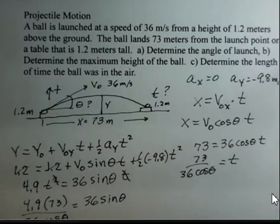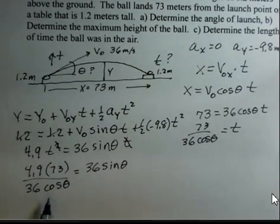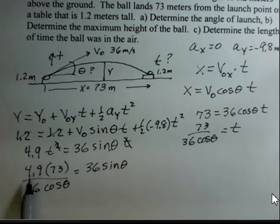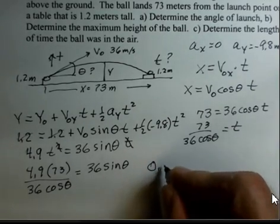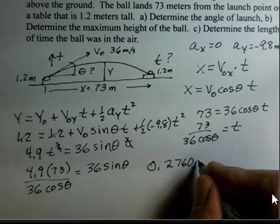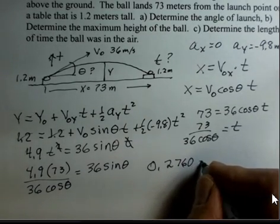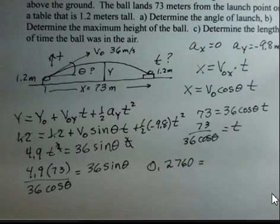Next, I'm going to multiply both sides by cosine theta. Divide both sides by 36. And when I do that, I'm going to simplify the numbers here. So 4.9 times 73 divided by 36 divided by 36. That number is approximately 0.2760. I'm going to pause here for just a second and get my calculator. Okay, back with you. There's something in that number just to look a bit strange, but it is correct.